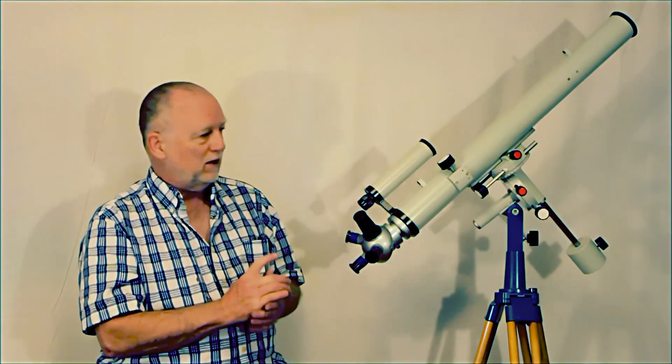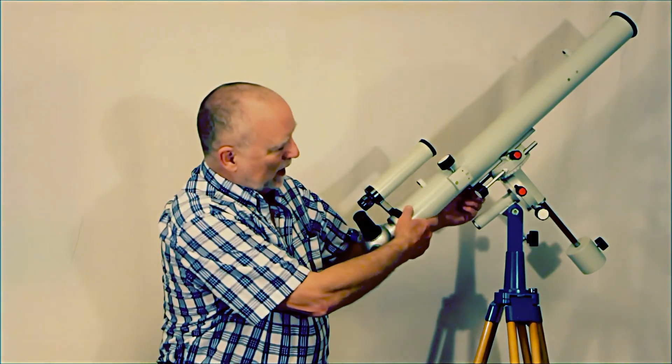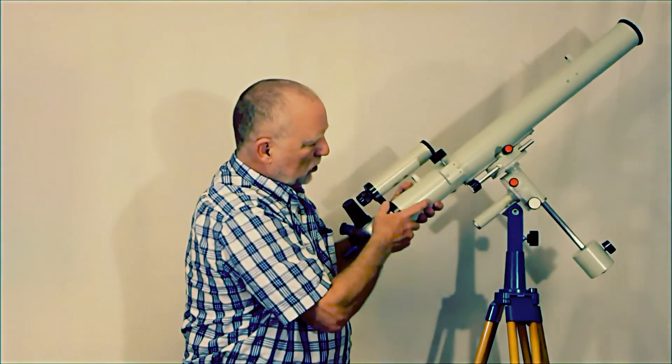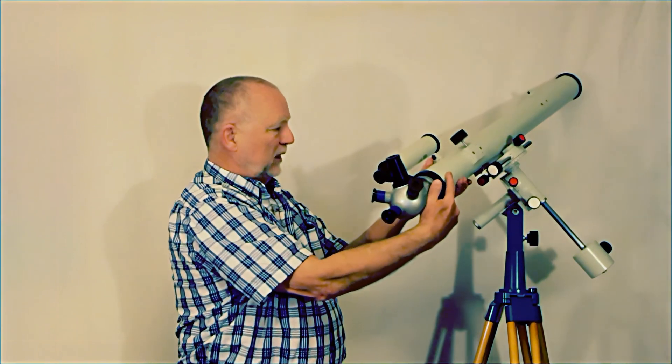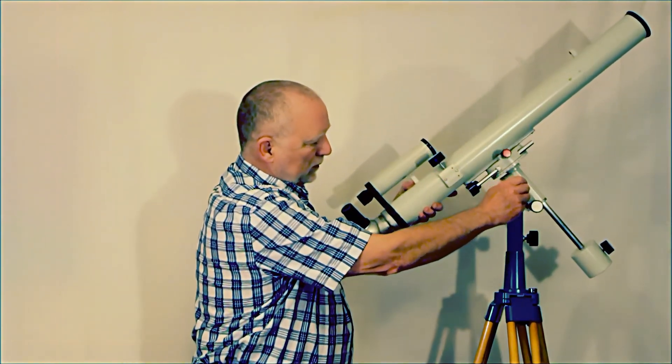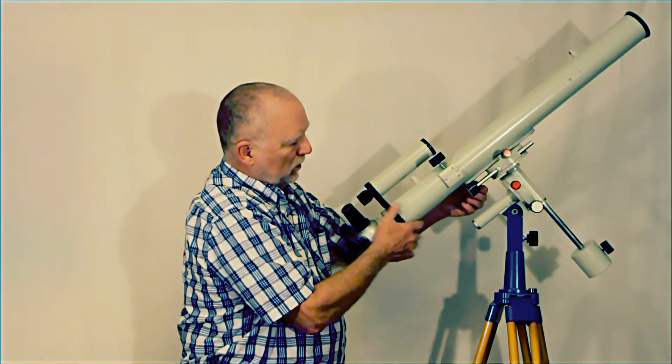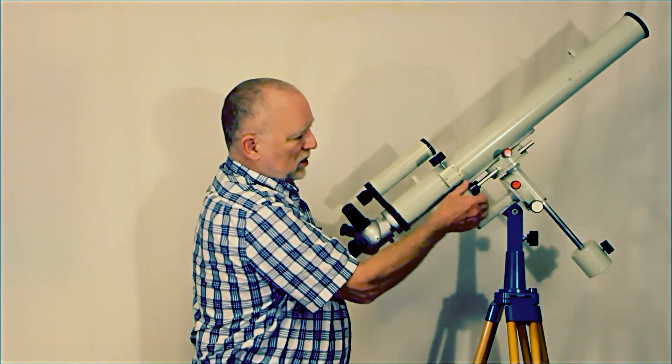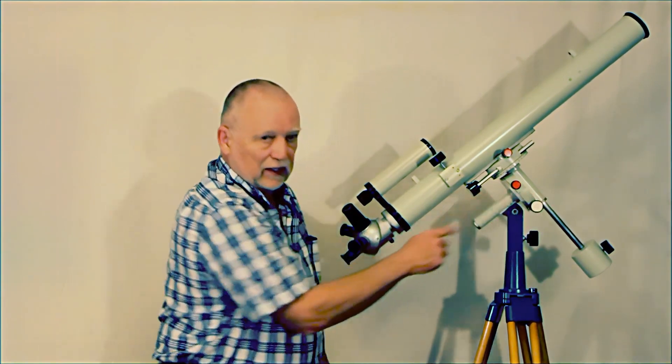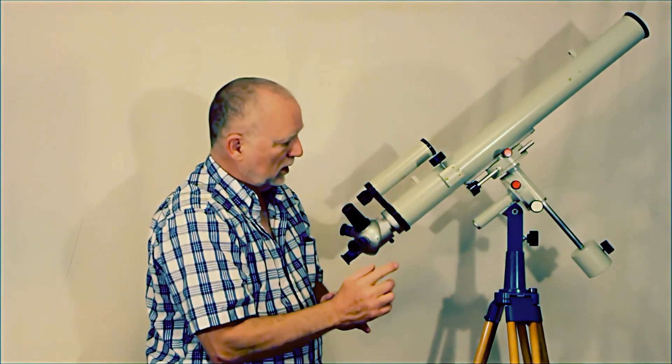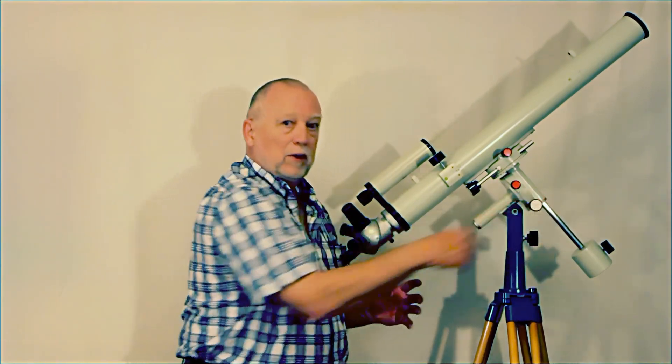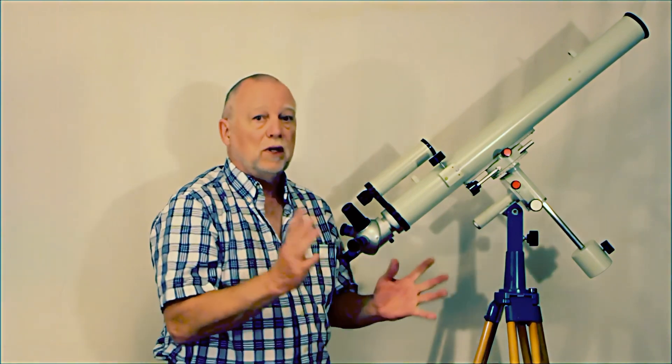It's also got a very nice little equatorial mount which is unusual and fun in its own right. I'm loosening the locks. The locks are indicated with red so once you lock it down you're going to have slow motion and this is a tangent kind of a slow motion so this doesn't have a gear in here. Instead it's got a little tangent arm and you can use this to track for a certain limited amount of time, maybe half an hour or so. It's plenty.